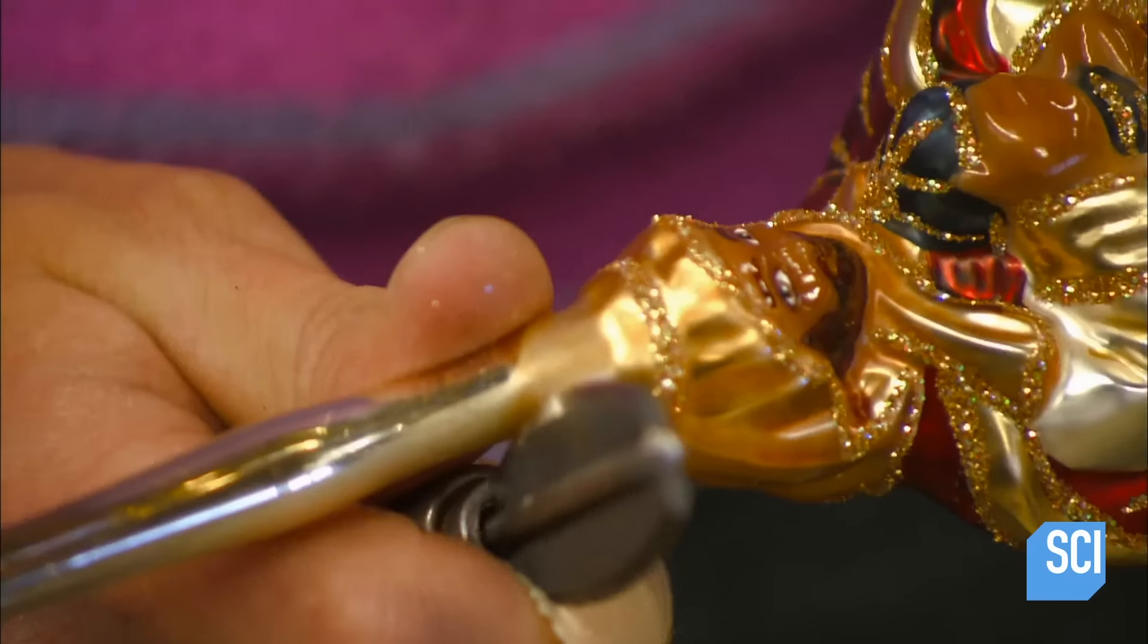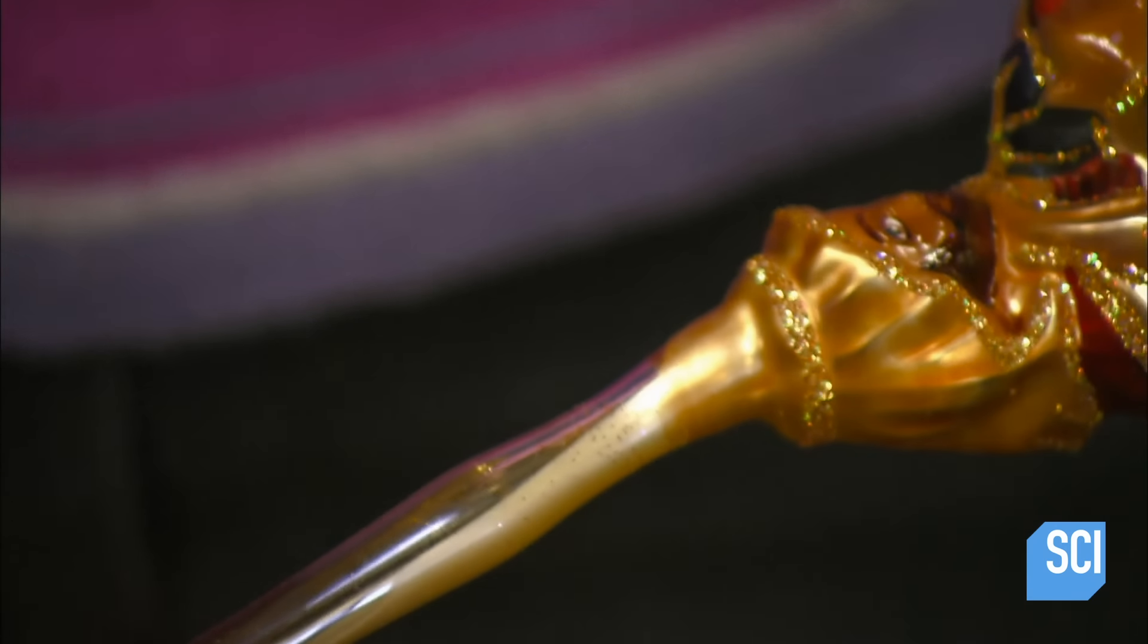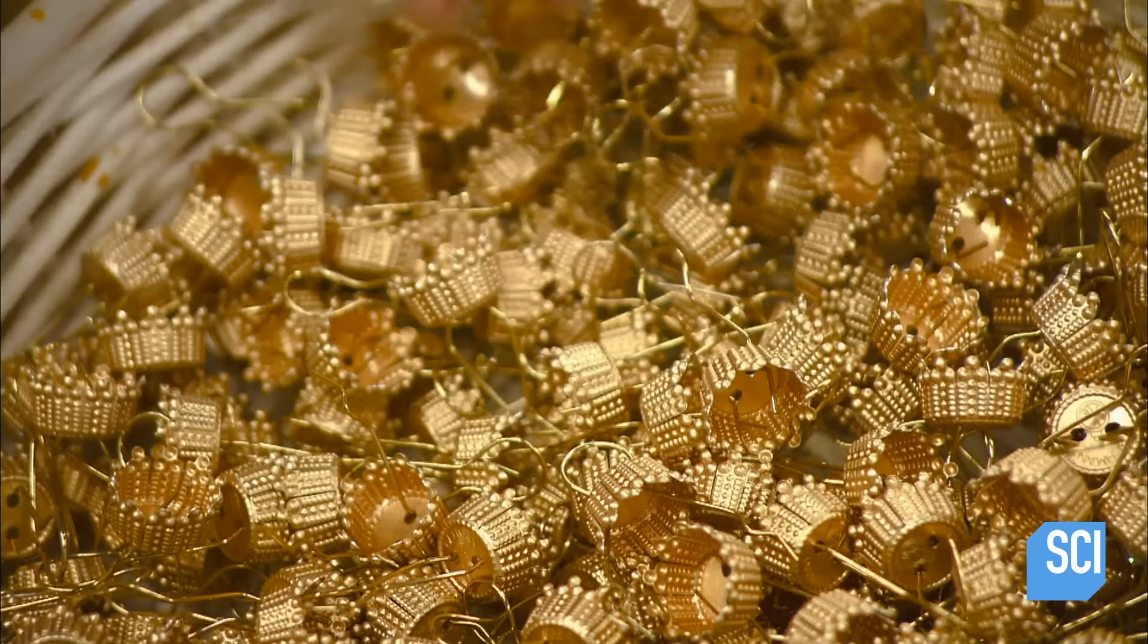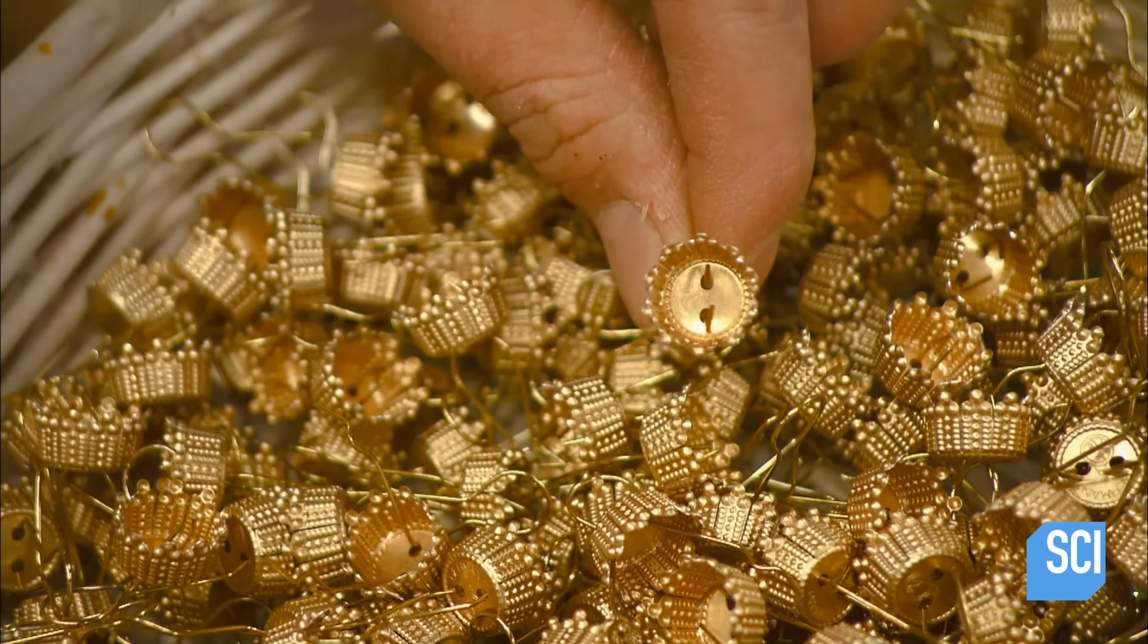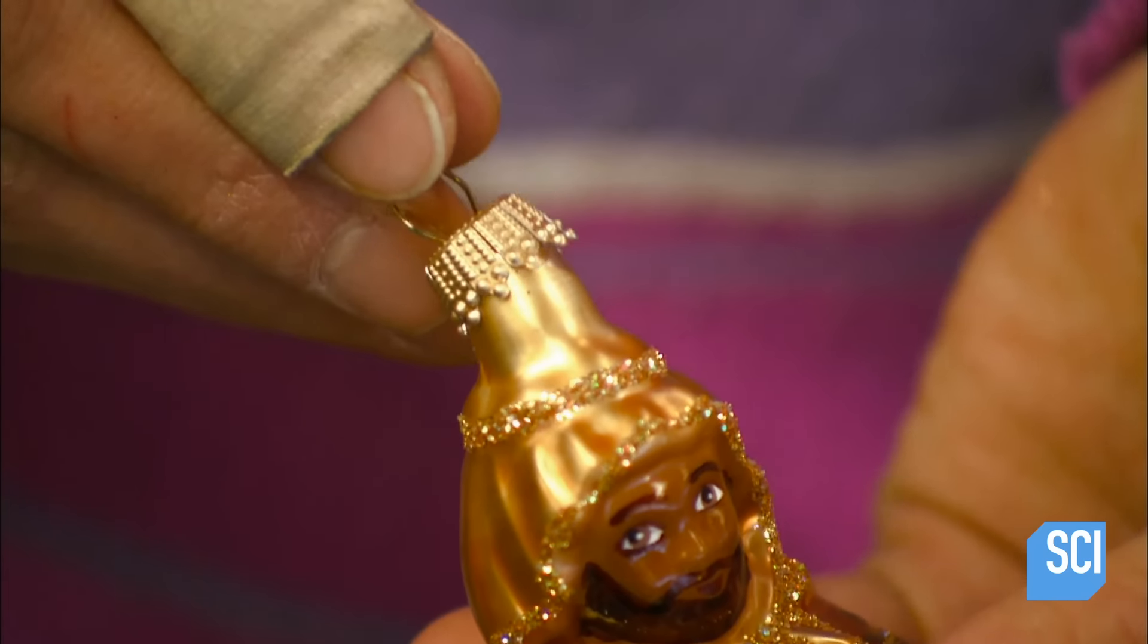Next, she makes an incision in the stem and snaps it off. A metal cap fits on the ornament stub.